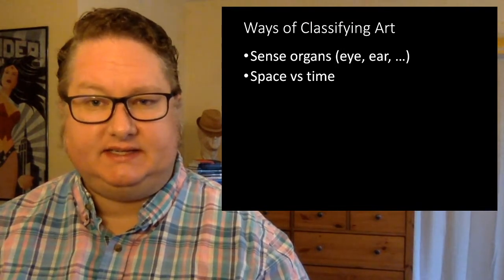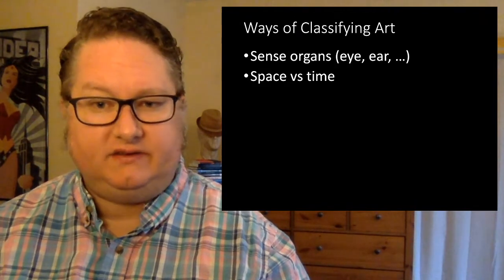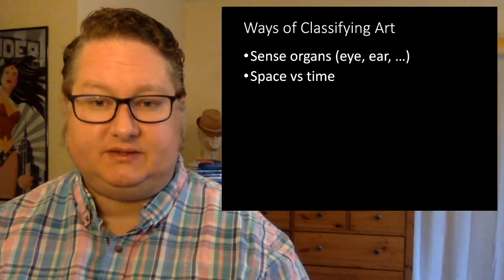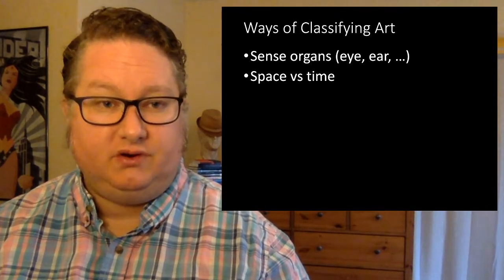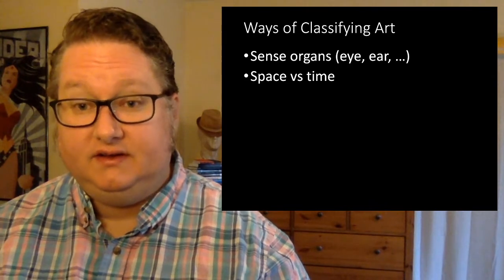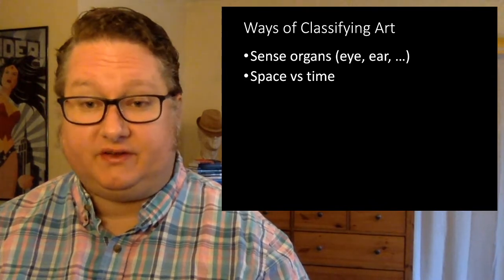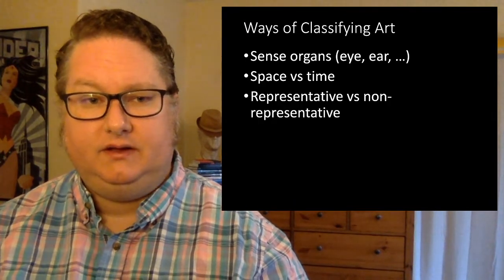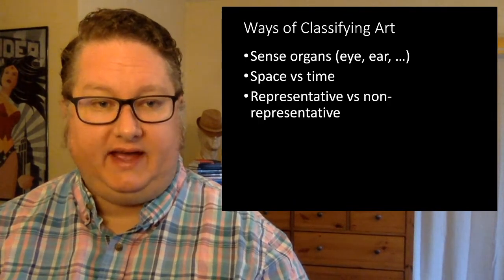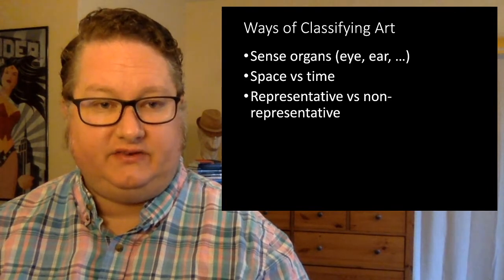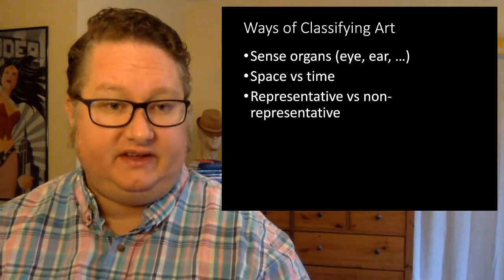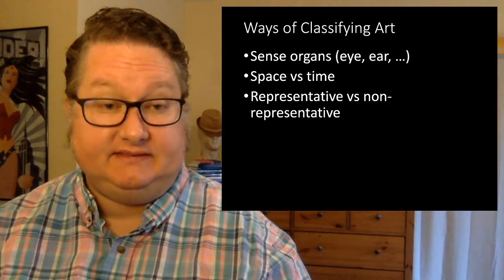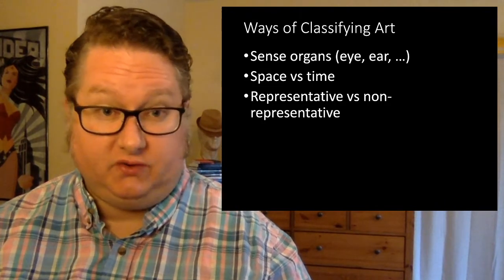He discusses the classification of art as spatial versus temporal, covered in the previous chapter. As he told us there, this sort of misses the temporal quality of spatial arts and vice versa, and confuses the physical product of art with the work of art. He also looks at classifications according to whether art is representative — like a painting depicting a person or a landscape — versus non-representative, where examples might be architecture or music.